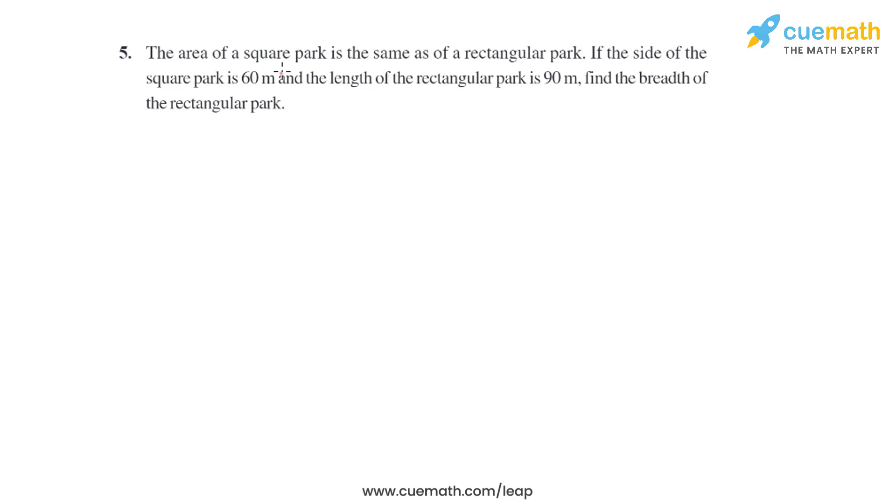Question 5 of this exercise: The area of a square park is the same as the area of a rectangular park. If the side of the square park is 60 meters and the length of the rectangular park is 90 meters, we have to find the breadth of the rectangular park.